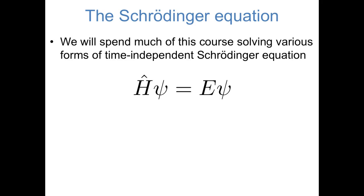We'll be spending most of the course solving the Schrödinger equation in various forms, but first I want to just introduce us to it. In its most abstract form, the Schrödinger equation actually looks really simple: H psi, that's the Greek letter psi, equals E psi.